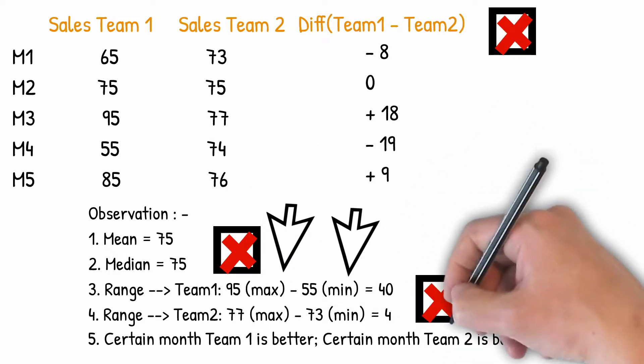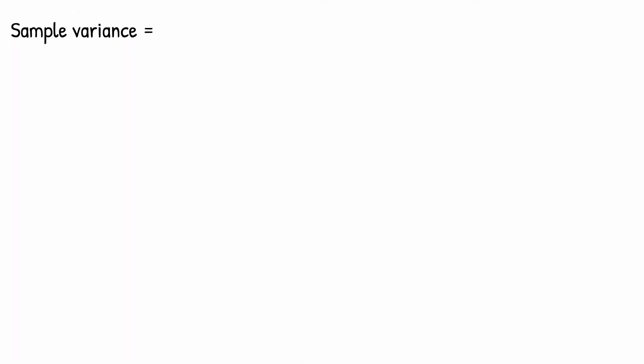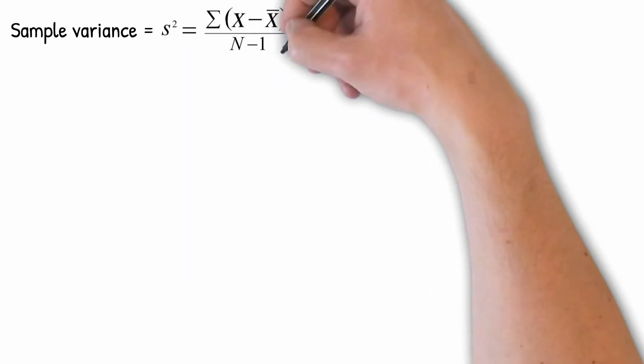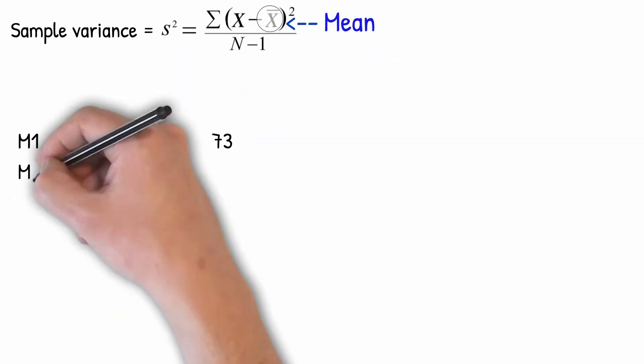Further, range only provides us an understanding of extreme values. Here we introduce the concept of variance, denoted by s squared, which is the average of the squared distance from the mean of the data. The formula for sample variance uses all the figures in the data unlike range.